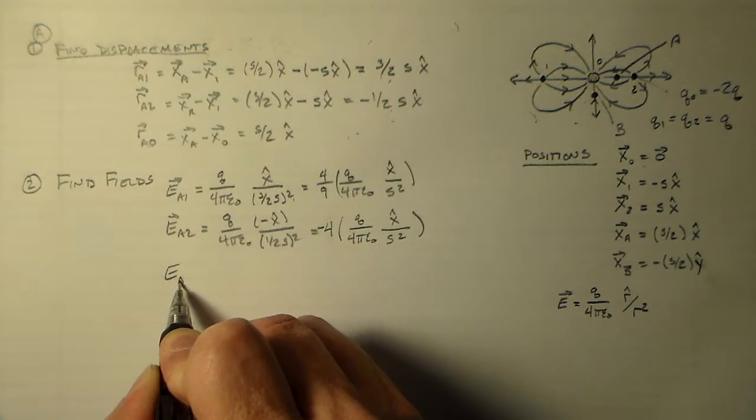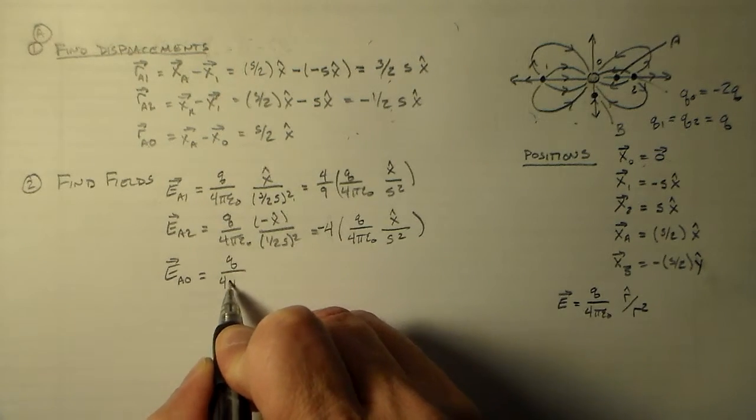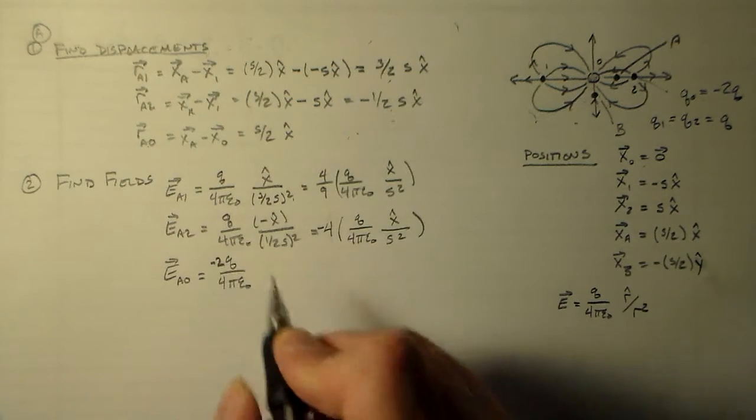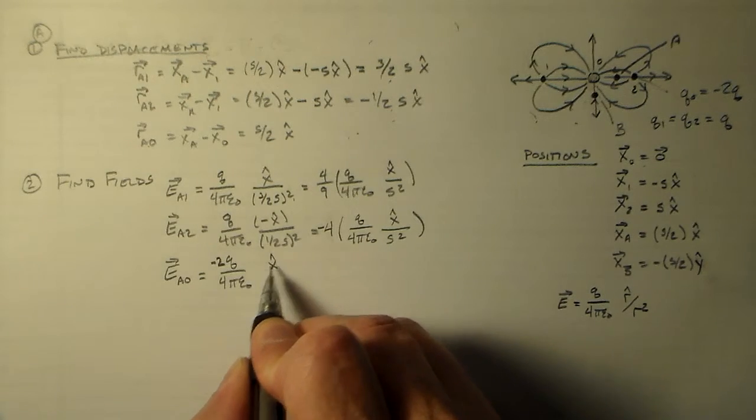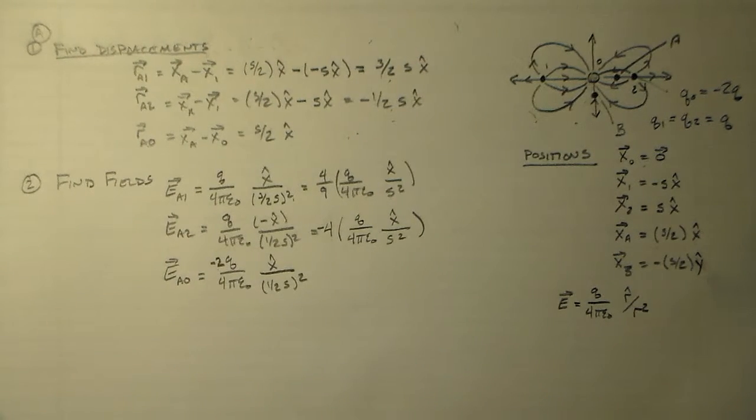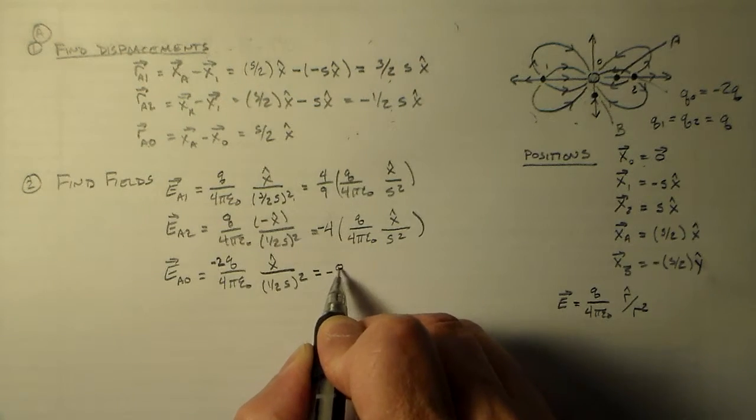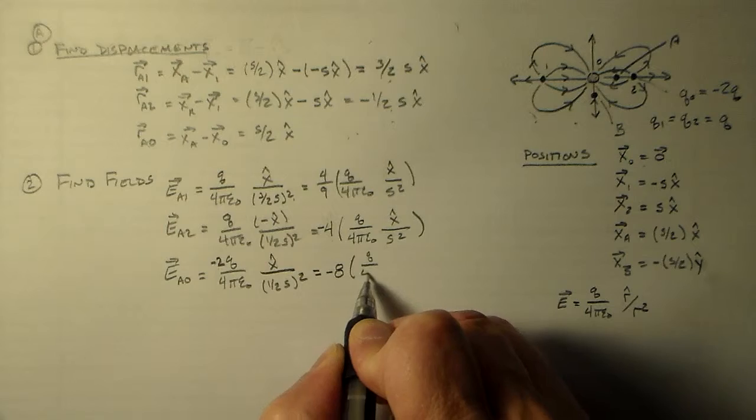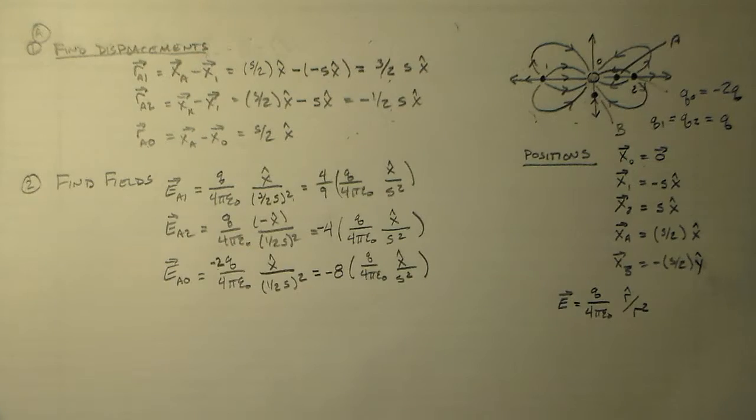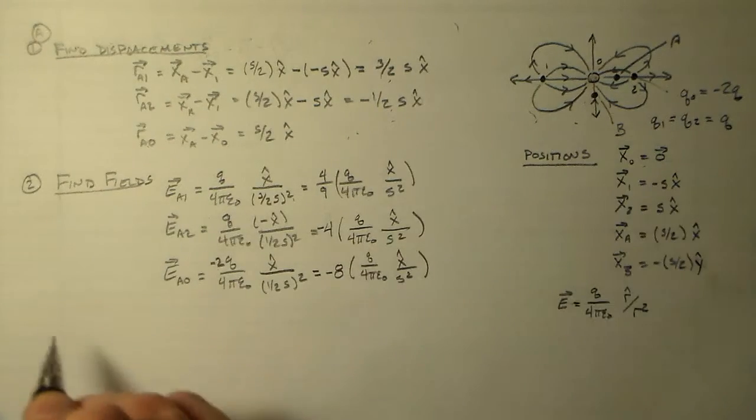And then we have Ea0, which is a whole lot like this one, only it's pushing in the opposite direction. And we've got 2q - oh, it's pulling in the same direction. I'm sorry. X hat over one half s squared. It's pulling in the same direction because it's got the opposite sign charge. So that's really minus 8 q over 4 pi epsilon not x hat over s squared. Alright, so that tells me that this guy's going to get pulled this way when we actually sum them up, right?